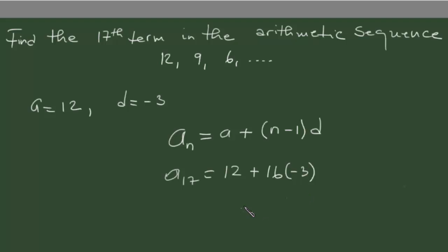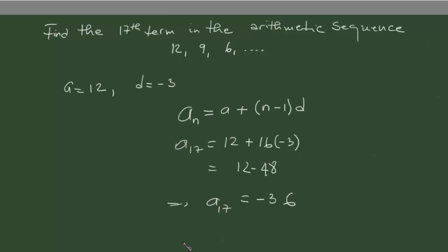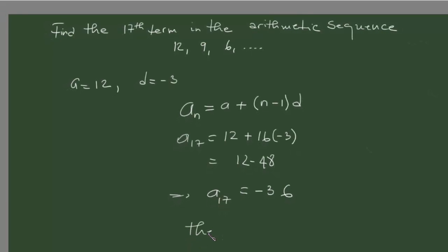And 16 times minus 3 is minus 48 plus 12 equals to here 12. So we're gonna have at the end a_17 equals to minus 36, and that's the 17th term of our arithmetic sequence.